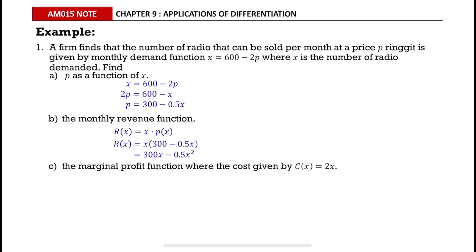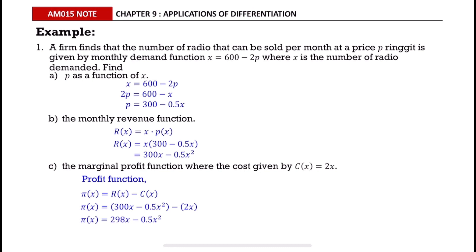Part (c): Find the marginal profit function, where the cost is given by C(x) = 2x. Before finding the marginal profit, find the profit function first by subtracting the cost function from the revenue function. Then find the marginal profit function by differentiating the profit function.